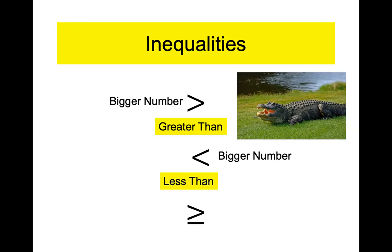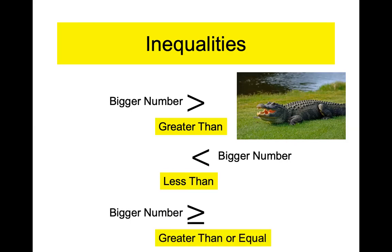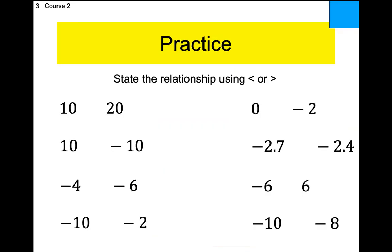This is the greater than symbol. And this one — the line underneath it means it could also be equal. Three is greater than or equal to three: well, it's not greater, but it is equal. So that's the greater than or equal to symbol. I don't have room for the less than or equal to symbol here.